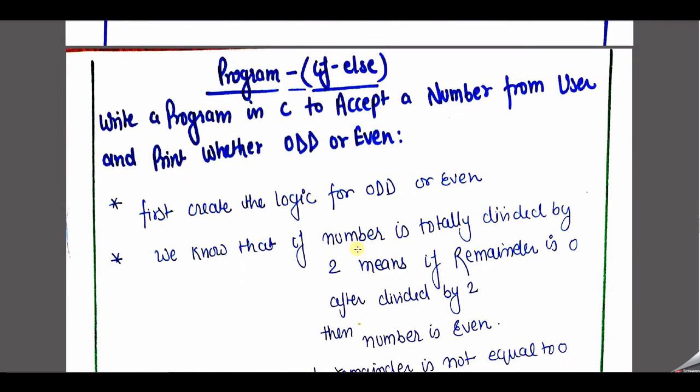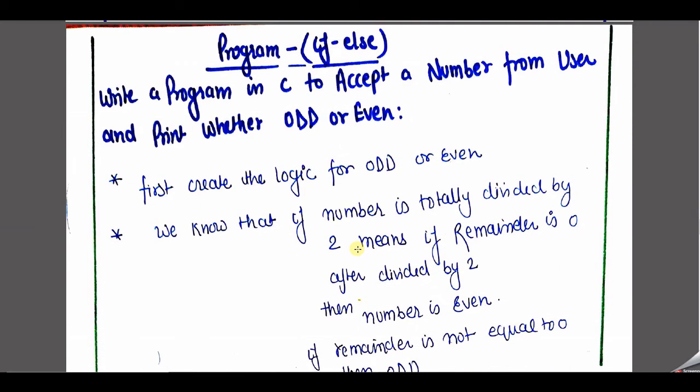Let's take a basic example of if and else — the most famous example. Write a program in C to accept a number from the user and print whether the number is odd or even. We need to check both: either the number is even or odd. Both situations are given. So what is the logic? Whenever the number is even, the number is fully divisible by 2 — meaning when we perform the division of number by 2, the remainder of the value is equal to 0.